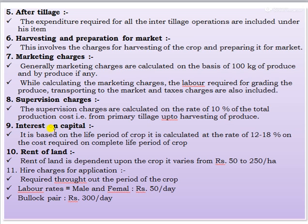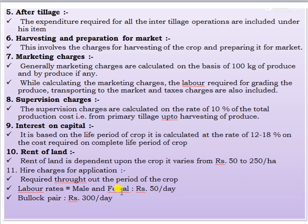Ninth is interest on capital, based on the life period of the crop and calculated at the rate of 12 to 18 percent on the cost required for the complete life period of the crop. Tenth is rent of land, which depends upon the crop and varies from 15 to 250 rupees per hectare. Eleventh is hire charges for implements, required throughout the period of the crop. Labor rates are: male and female — 50 rupees per day; bullock pair — 300 rupees per day.